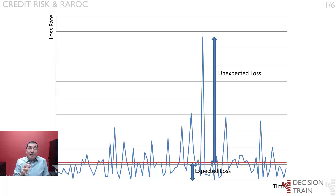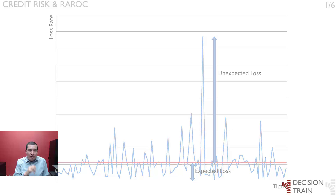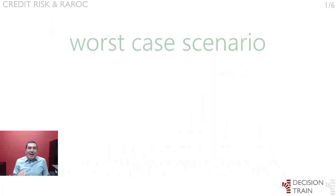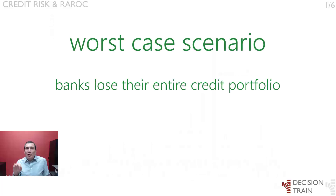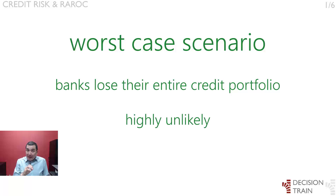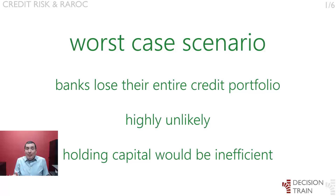Thus, capital is needed to cover the risks of such peak losses, and therefore it has a loss-absorbing function. The worst case one could imagine would be that banks lose their entire credit portfolio in a given year. This event, though, is highly unlikely, and holding capital against it would be economically inefficient.